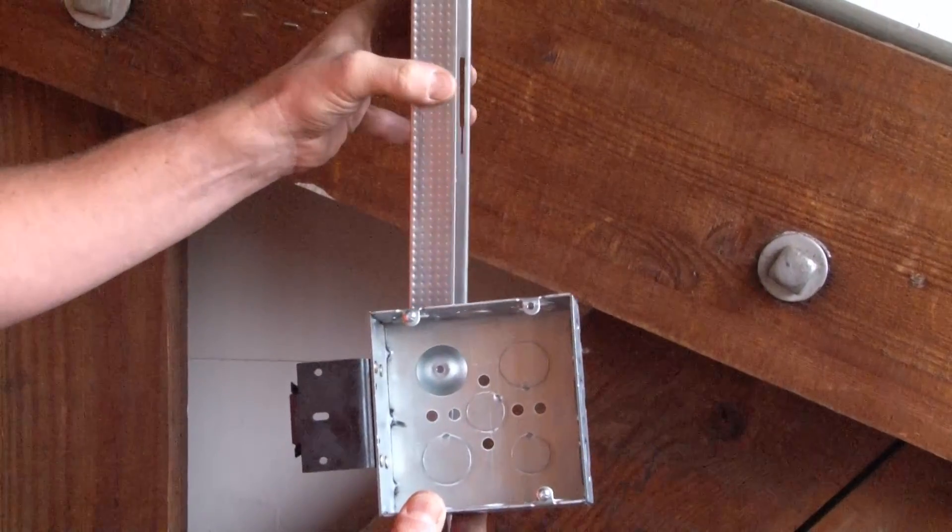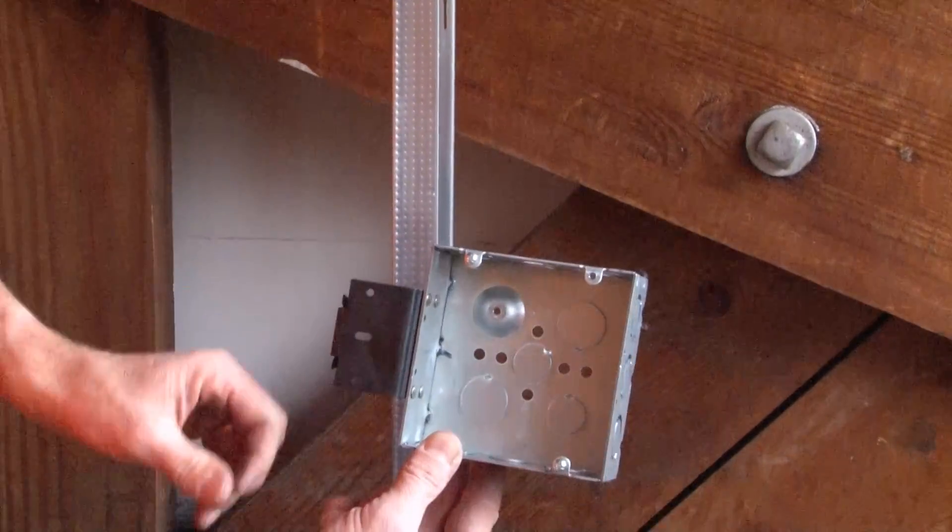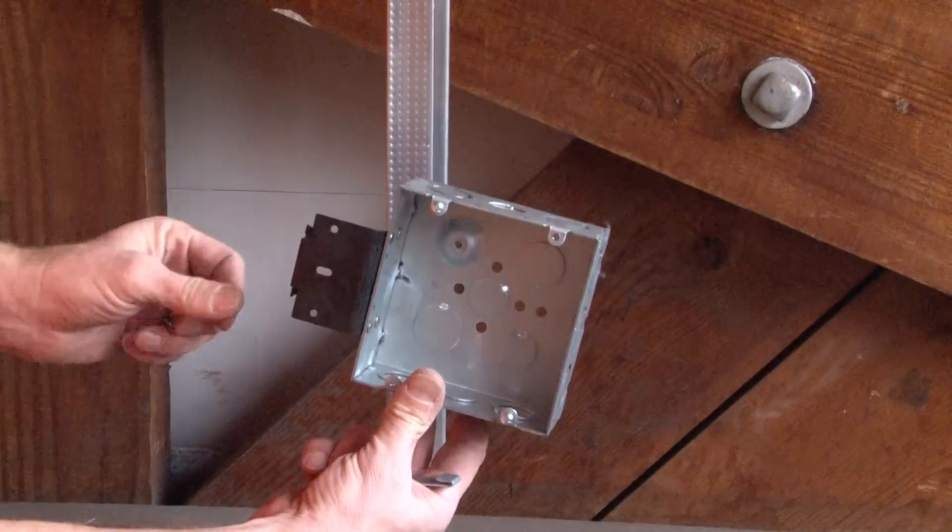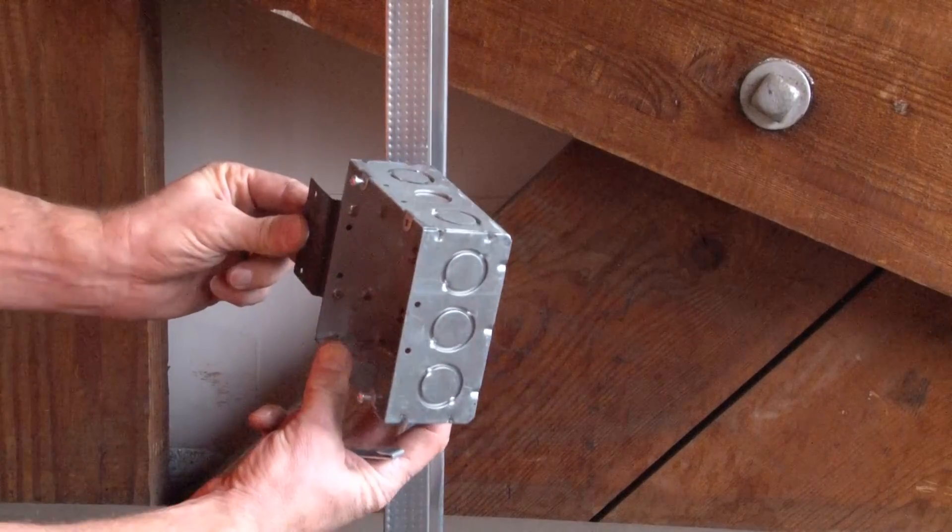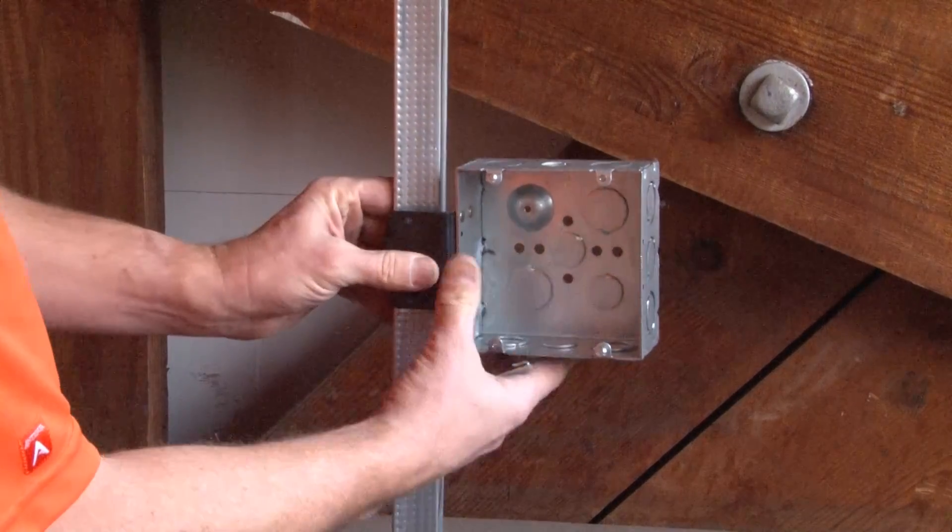As you can see here, we have a metal stud in a construction situation. If I want to place my junction box right here, it's quick and easy with a Garvin metal stud bracket. Simply align it with the edge of the metal stud and then snap it into place.